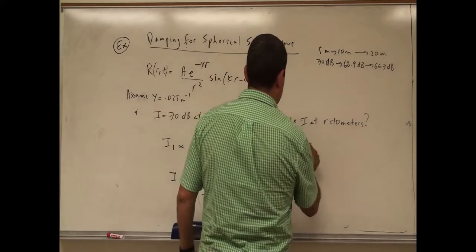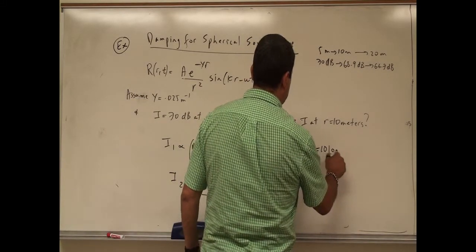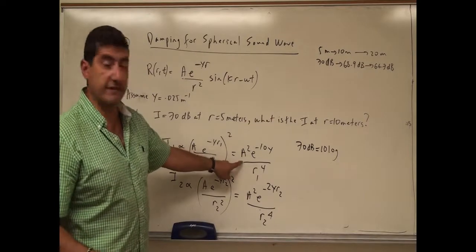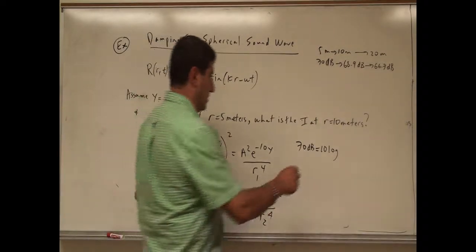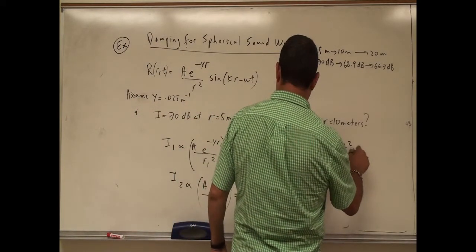So we're going to say 70 decibels is going to be 10 log of this one divided by I0. So it's going to be A squared E to the minus...